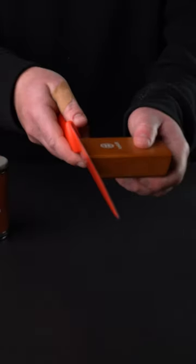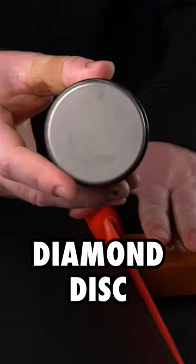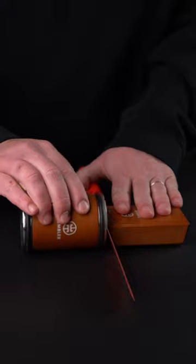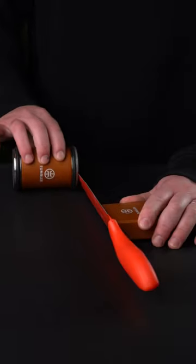I'm attaching the magnetic holder to the blade and starting with the diamond disc. I'm just rolling the wheel along the edge here, sharpening the entire blade on both sides.